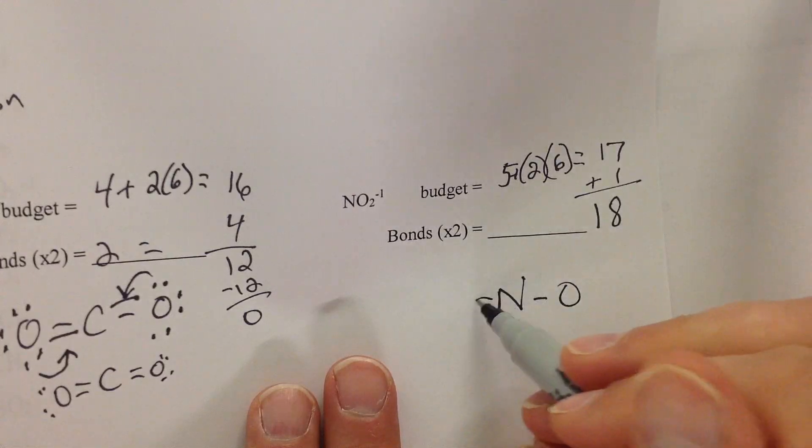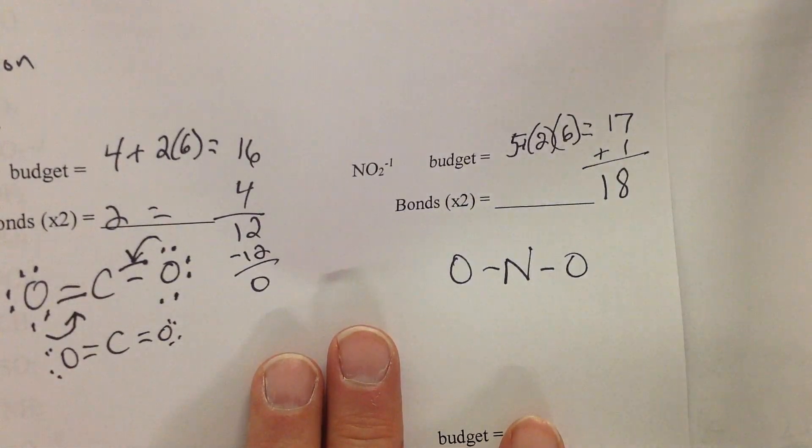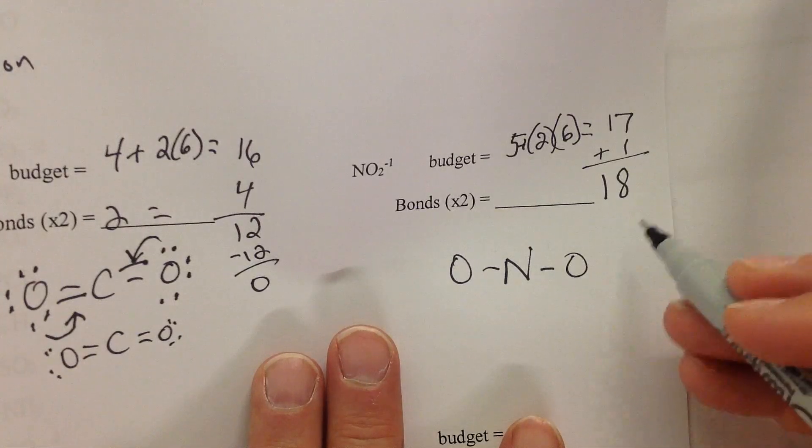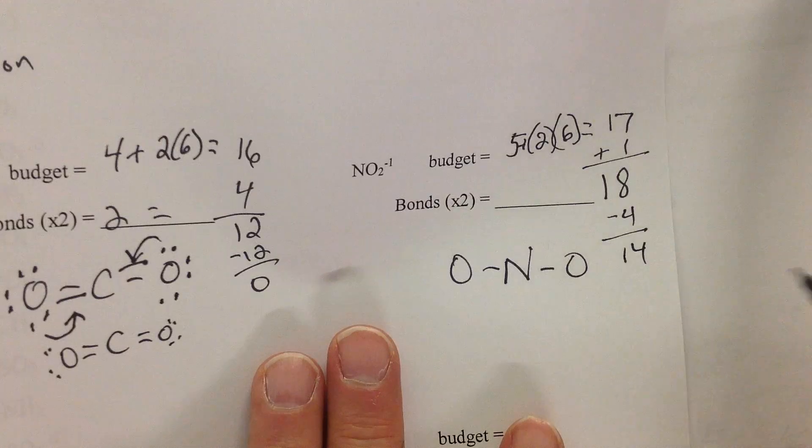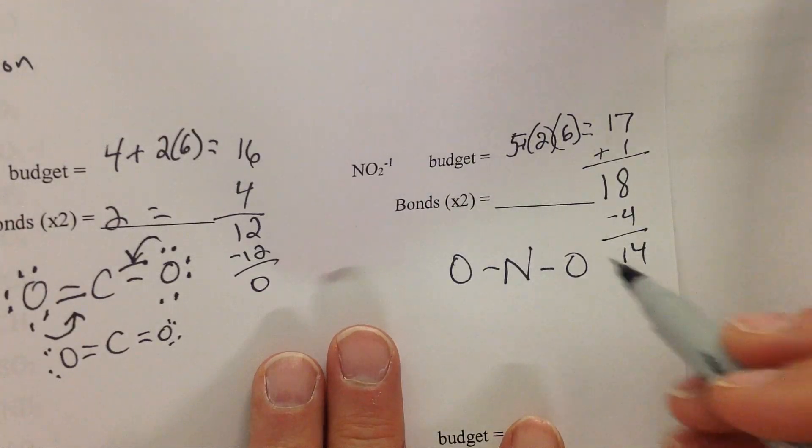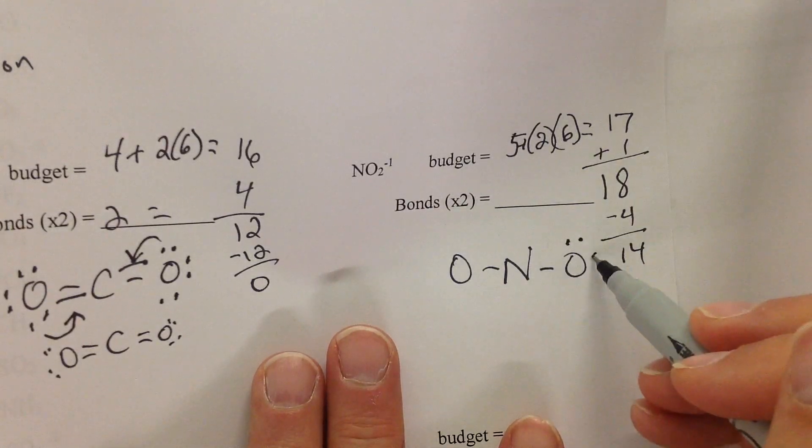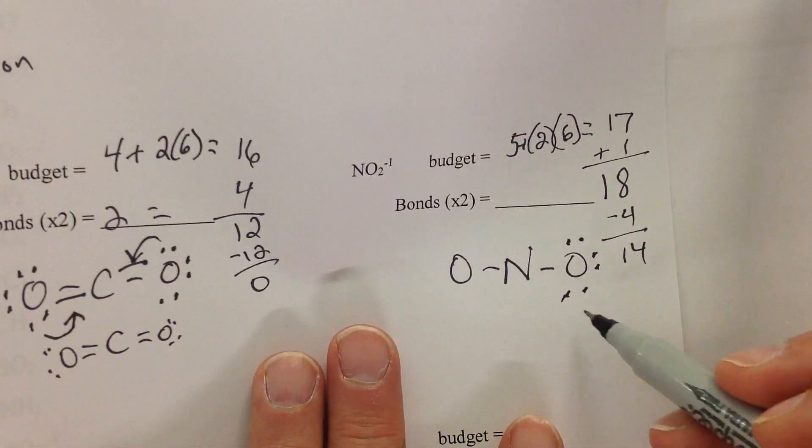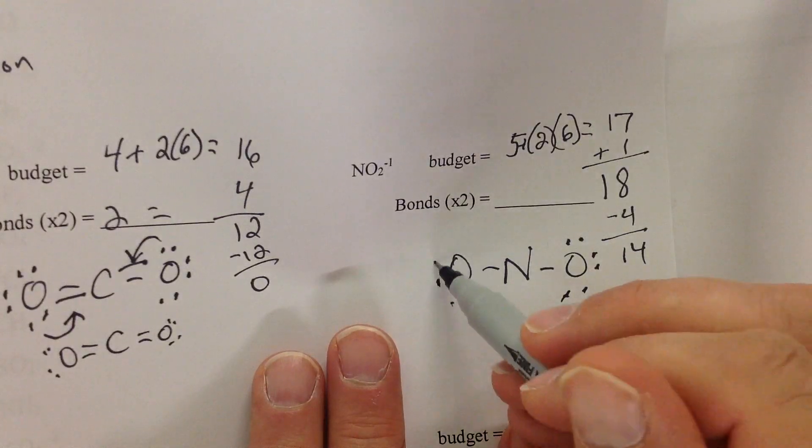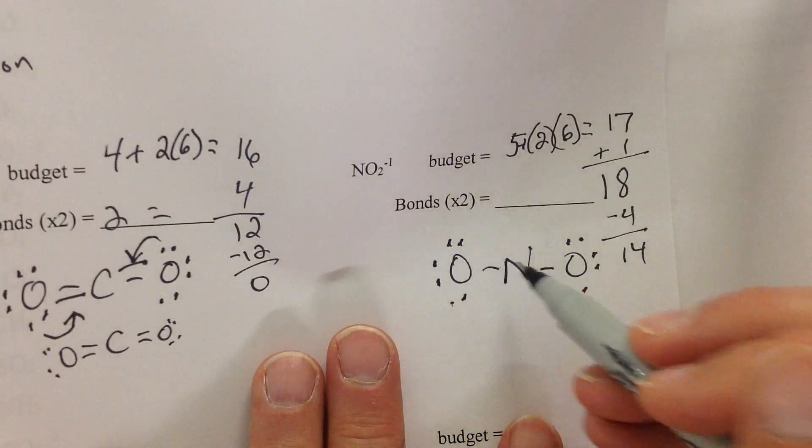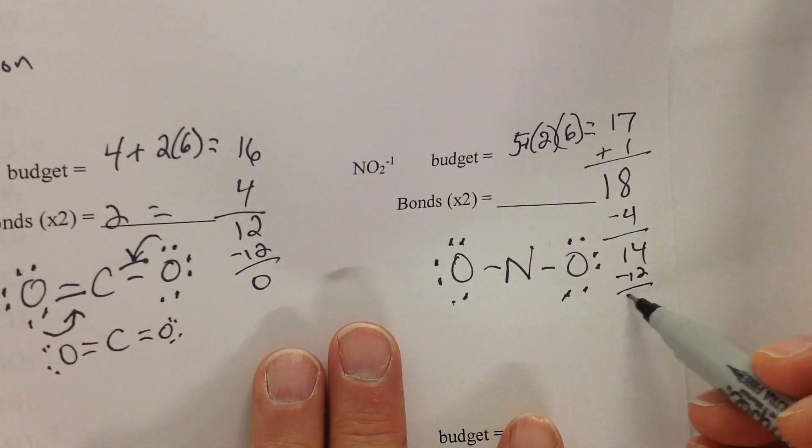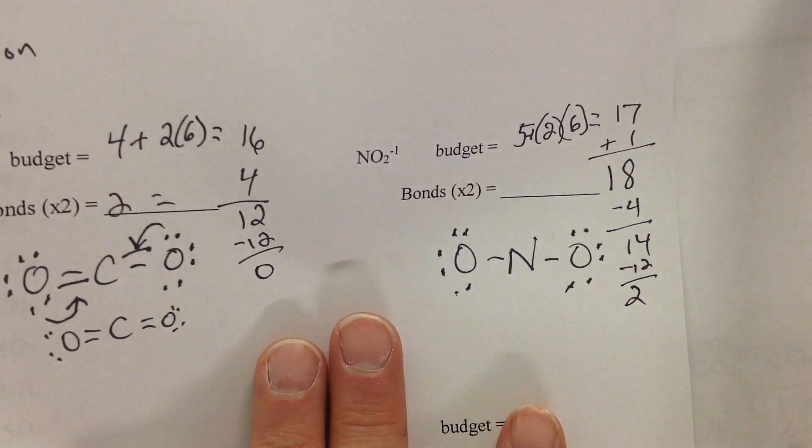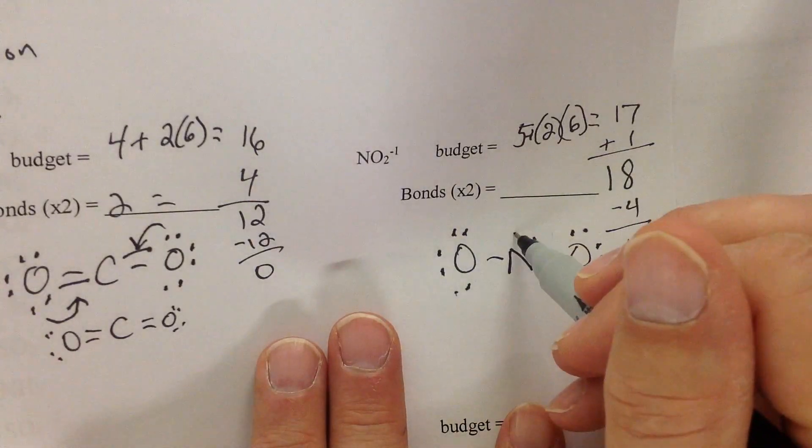So now let's draw out our skeleton structure. What do we subtract? 4. 14 left. Who do we start feeding? Babies! 1, 2, 3, 4, 5, 6. I hope you understand that now there's 8 electrons around this oxygen. 1, 2, 3, 4, 5, 6, 7, 8. The bonds count as electrons. Now if you do that, you subtract 12 and we have 2 left over. Who gets the leftovers? Mama, central element.